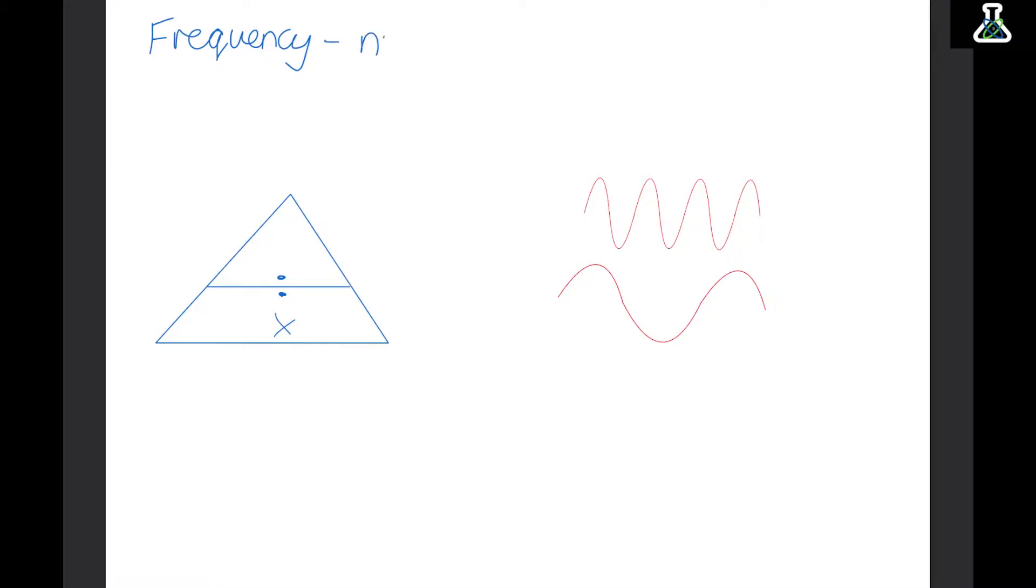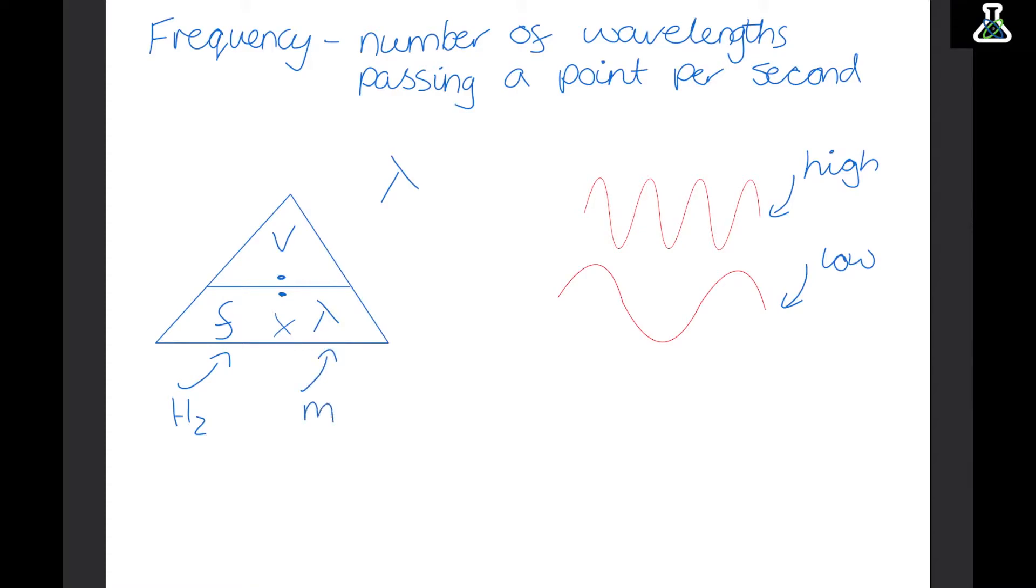The distance between two crests is the wavelength. Frequency is the number of wavelengths that pass a point per second. So the closer together the wavelengths, the more that will pass a point per second. Frequency can be calculated by dividing velocity by the wavelength. Frequency is measured in hertz, wavelength is measured in meters, and velocity is measured in meters per second.